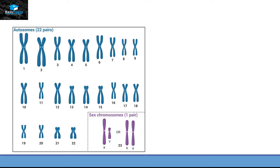Out of these 23 pairs of chromosomes, 22 pairs are common both in male and female and that's why they are called autosomes. One pair is different in male and female and that pair is called sex chromosomes.